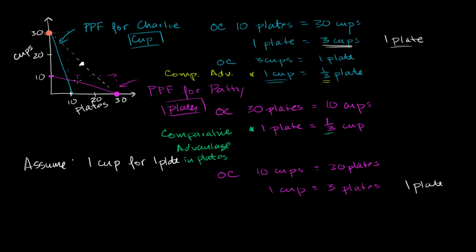But if we assume that in all of these scenarios they have the same number of inputs — let's say they each have one employee — and given that same number of inputs, Patty is able to produce more plates than Charlie, then Patty would have an absolute advantage in plates. And if given the same number of inputs Charlie is able to produce more cups than Patty, then he would have an absolute advantage in cups.